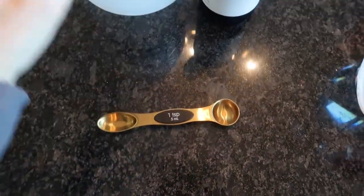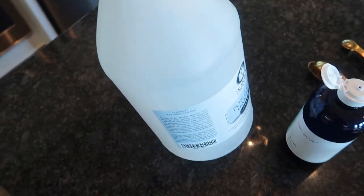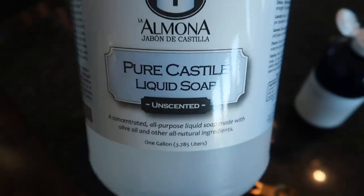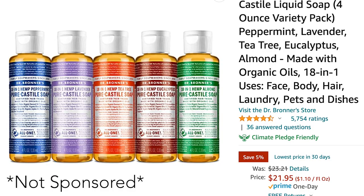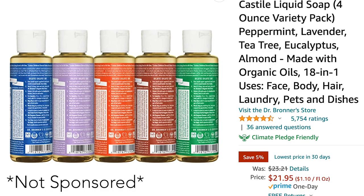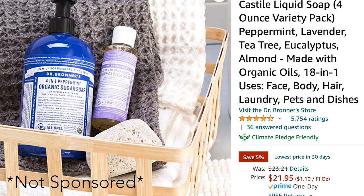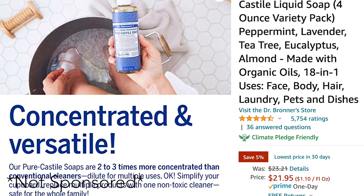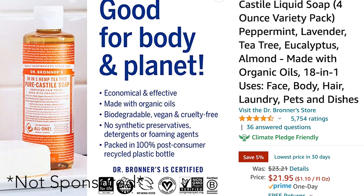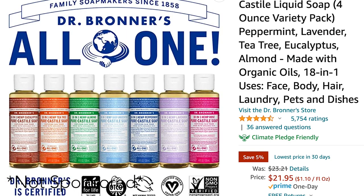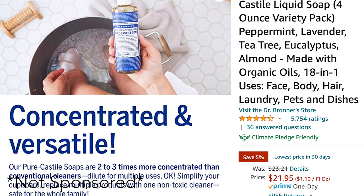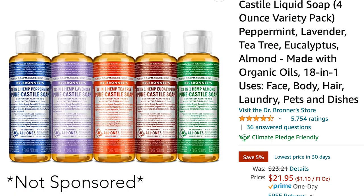Two teaspoons of Castile soap. By the way, I got to order a brand new one of these. I've gone through this entire thing. This is all natural and unscented if you love that. I'm so excited. I just ordered this Dr. Bronner's four pack. It has peppermint, lavender, tea tree, eucalyptus, and almond. I cannot wait to apply this to so many different cleaning hacks in my house. This is just going to up-level the cleaning and make it way more fun.